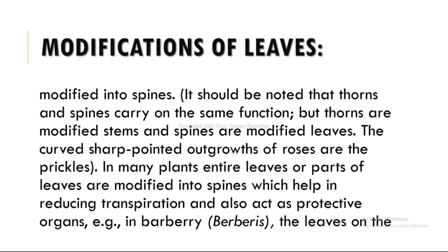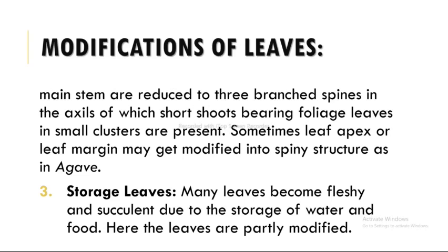The curved, sharp-pointed outgrowths of roses are called prickles. In many plants, entire leaves or parts of leaves are modified into spines which help in reducing transpiration and also act as protective organs. For example, in Berberis (barberry), the leaves on the main stem are reduced to three-branched spines in the axils of which short shoots bearing foliage leaves in small clusters are present. Sometimes the leaf apex or leaf margin may get modified into a spiny structure, as also present in Agave.